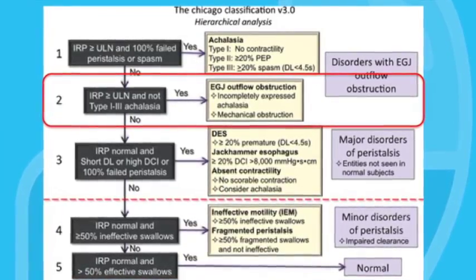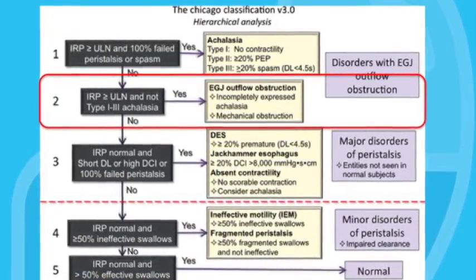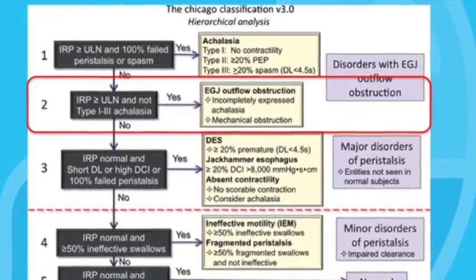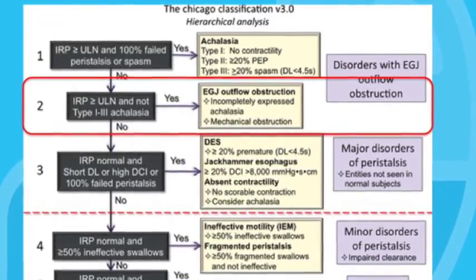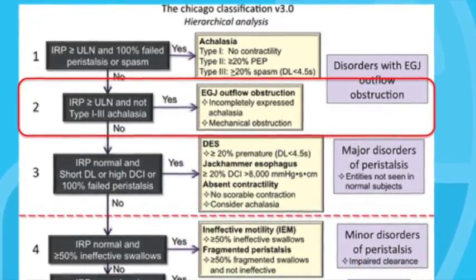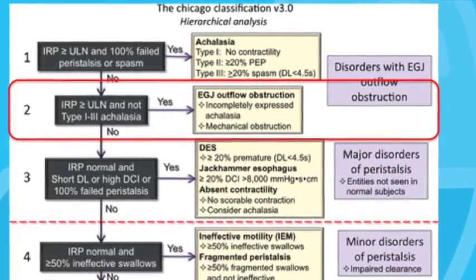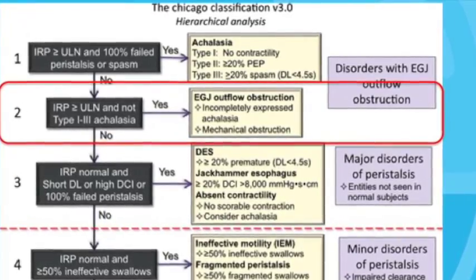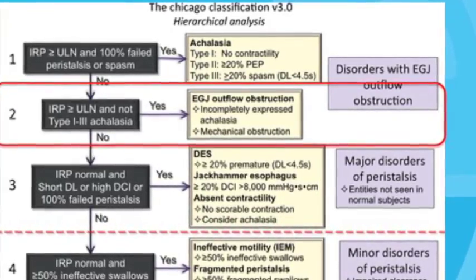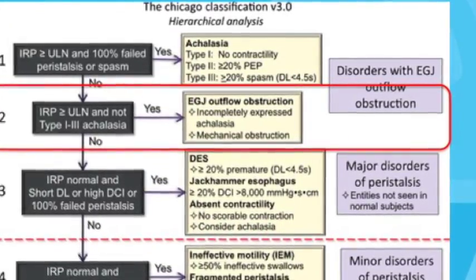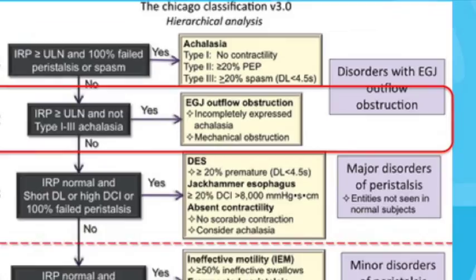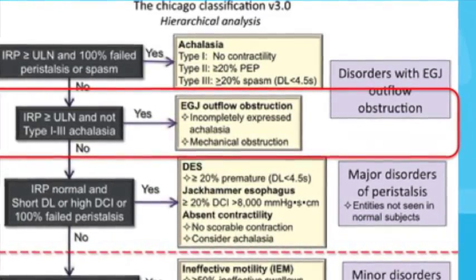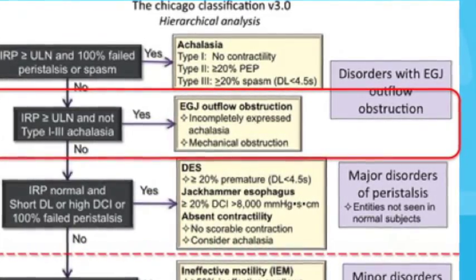Some potential causes of EGJ outflow obstruction include distal esophageal stricturing from reflux disease, or in patients who have had a previous Nissen fundoplication which is too tight. It is also possible that EGJ outflow obstruction may in fact be the initial presentation of achalasia.